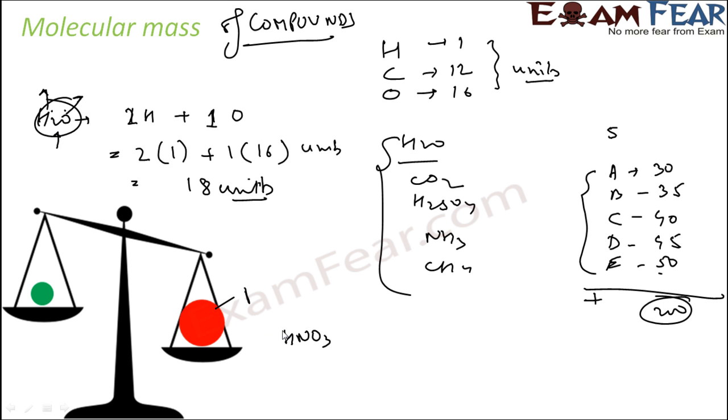Let's take nitric acid. I want to find the weight of nitric acid. Nitric acid has one hydrogen plus one nitrogen plus three oxygen. So let's add this. One nitrogen is one, one nitrogen is 14, three oxygen is 16 into three, 3 into 16 is 48. So how much you get? 63 unit.